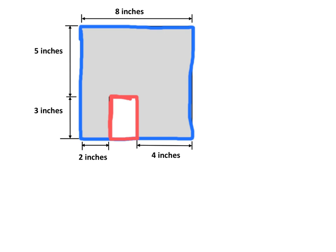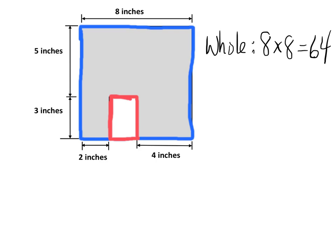For the whole rectangle, we can see that if we add the two side lengths together, five plus three is eight, so this side length is eight. Looking up here, we confirm the other side is also eight. So the whole rectangle is 8 times 8, which is 64 square inches.